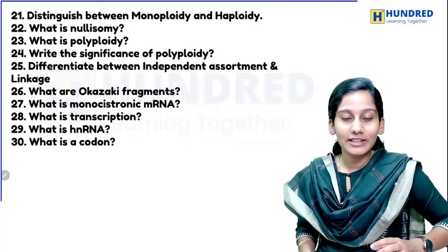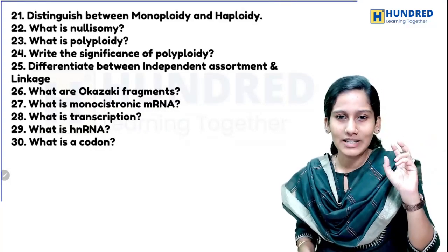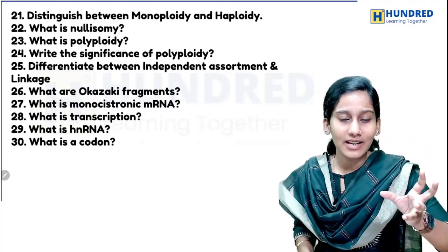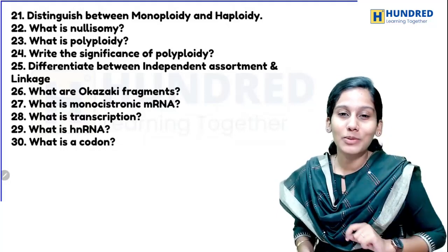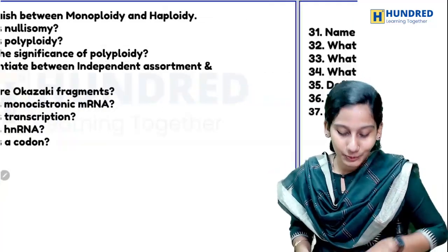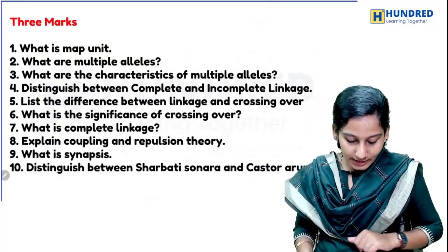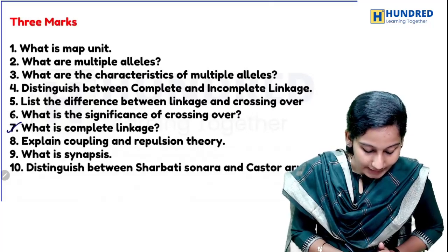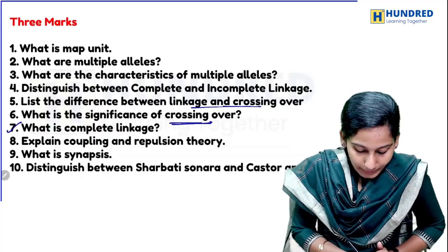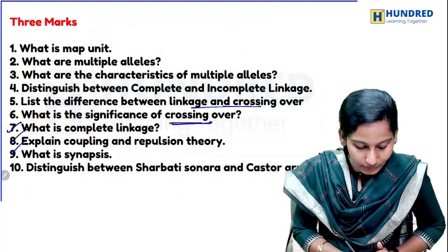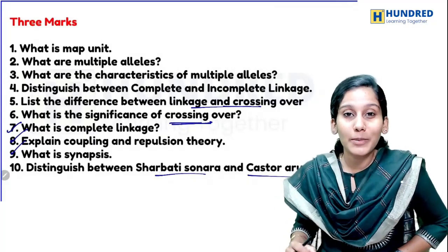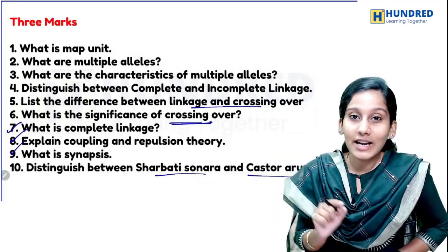In the last part you will also study the molecular genetics chapter — same continuation. Definitions include HnRNA, what is transcription, what is a stop codon. Linkage is very important — what is the significance of crossing over, very, very important. Linkage and crossing over, coupling and repulsion theory, and synapse are also important questions.